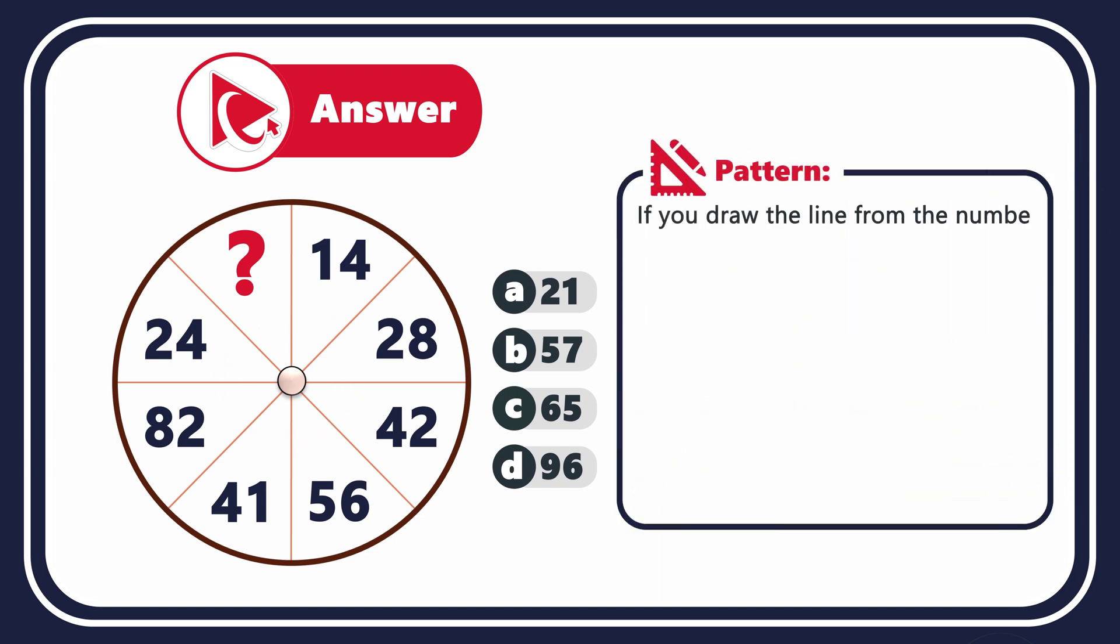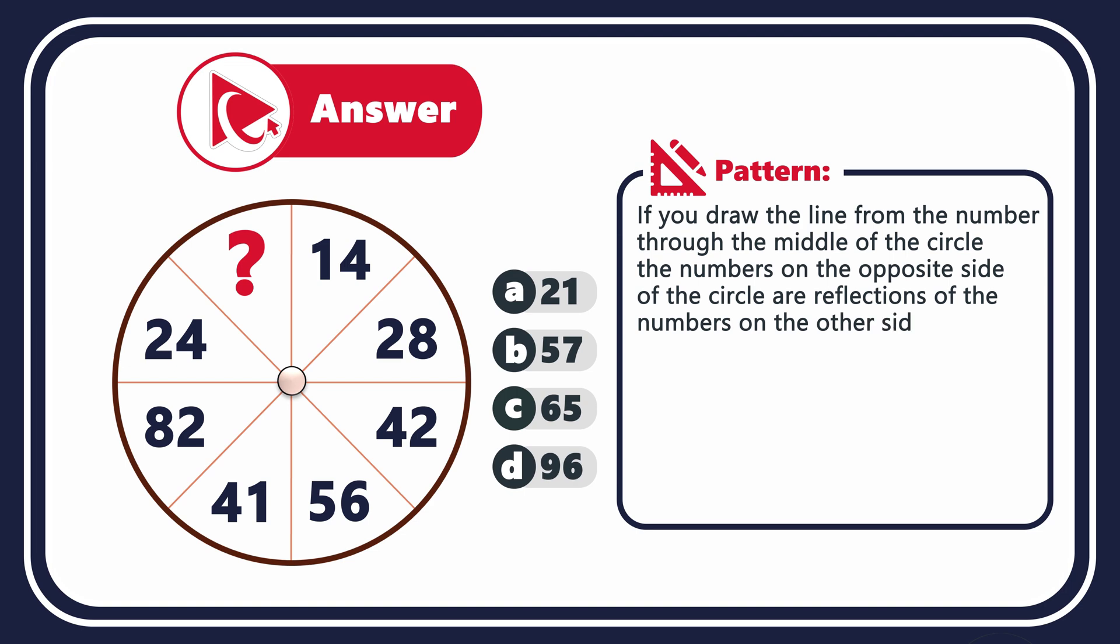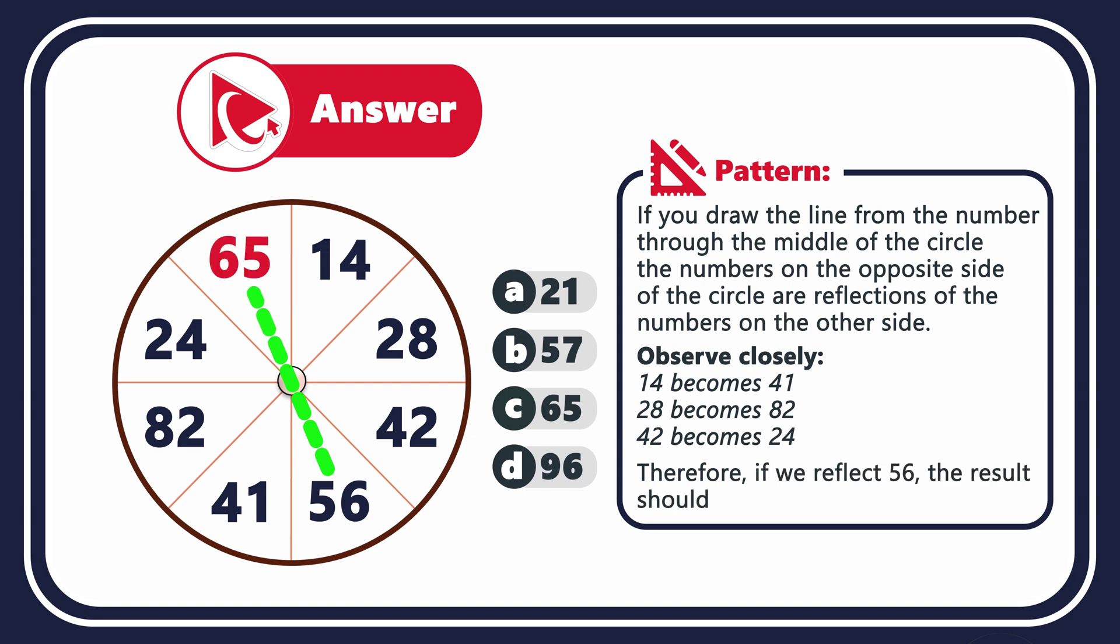Take a look at the circle in the middle. If you draw the line from the number through the middle of the circle, the numbers on the opposite side of the circle are reflections of the numbers on the other side. Let's take a close look. For example, 14 becomes 41, 28 becomes 82, 42 becomes 24, and 56 then becomes 65. So the correct answer here is choice C, 65.